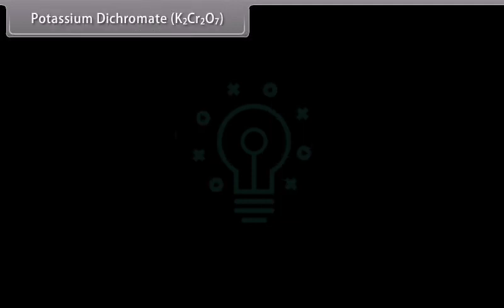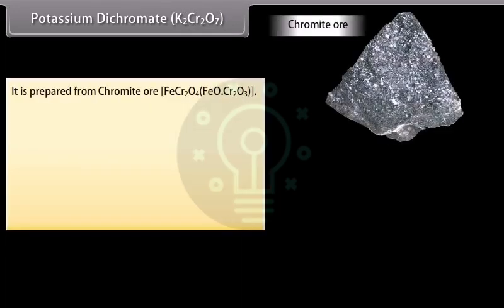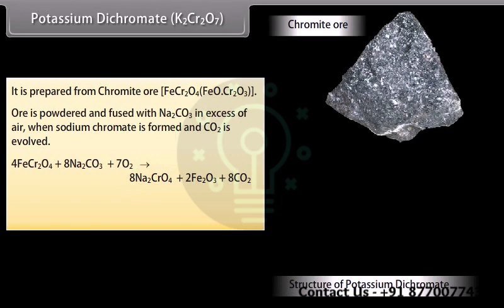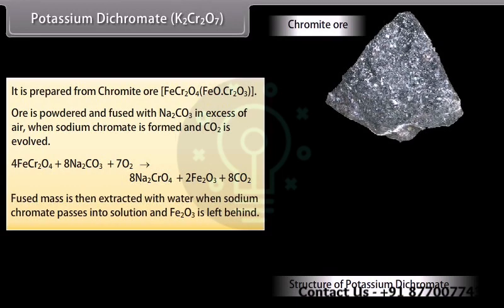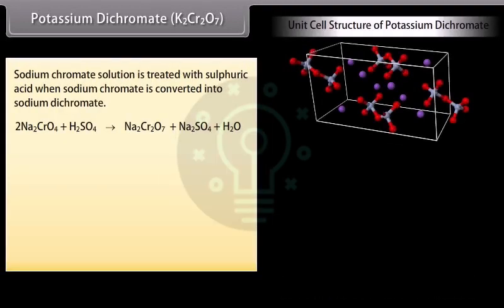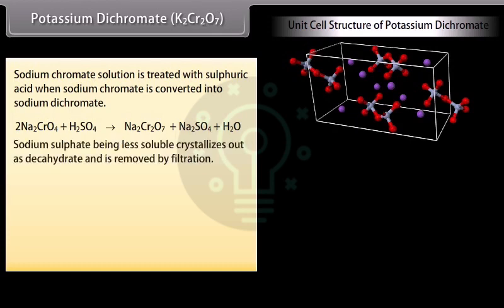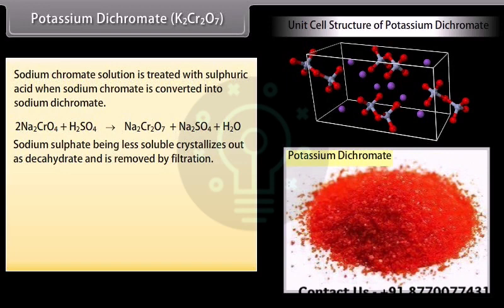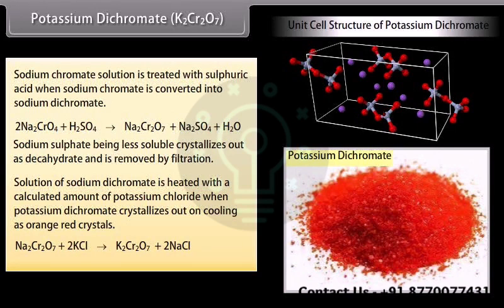Potassium dichromate (K₂Cr₂O₇) is prepared from chromite ore. The ore is powdered and fused with Na₂CO₃ in excess air to form sodium chromate. The fused mass is extracted with water; sodium chromate passes into solution while Fe₂O₃ is left behind. The sodium chromate solution is treated with sulfuric acid to convert it into sodium dichromate. Sodium sulfate crystallizes out as decahydrate and is removed by filtration. The sodium dichromate solution is then heated with a calculated amount of potassium chloride, and potassium dichromate crystallizes out on cooling as orange-red crystals.